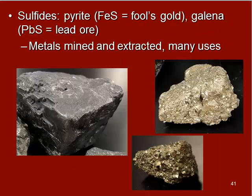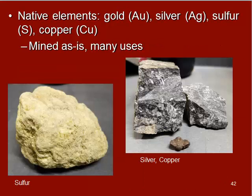Sulfides also have sulfur in the chemical formula, but the sulfur is bonding with a metal. These are another source of major metals we use, like lead and iron. We have FeS — iron and sulfur — in fool's gold or pyrite. Galena, which you can see here, has lead and sulfur in it and is a lead ore. So sulfides are major sources of some of the metals that we use.